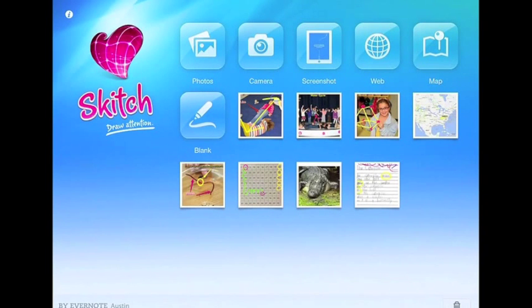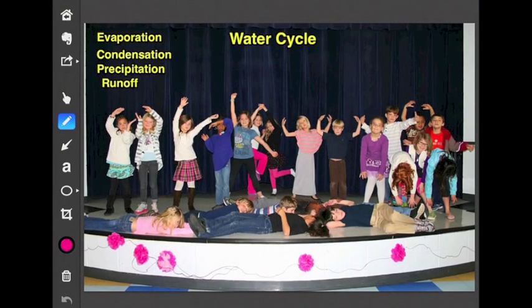Let's take a look at some of the ways that we could integrate this within the classroom. One way that we can integrate this is by taking pictures of things that happen. Here's a picture of students creating a tableau for the water cycle. I simply added the words of the process in the left-hand corner.